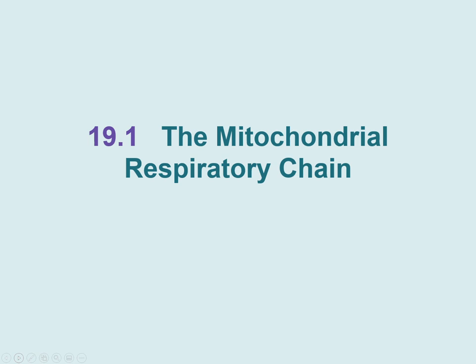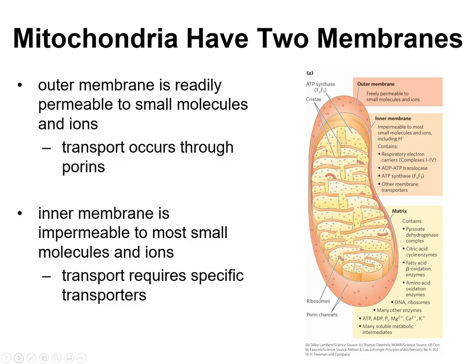Let's start with the respiratory chain, which you may have seen called the electron transport chain, or ETC — same thing. Just to refresh your memory about mitochondria: they have two membranes. There's an outer membrane that is readily permeable to small molecules and ions; transport occurs through what's called porins. Then there's an inner membrane that is impermeable, so you can't just get all the way through the mitochondria. That inner membrane has specific transporters for different molecules.